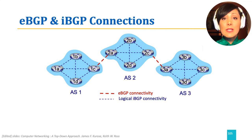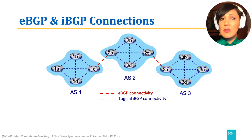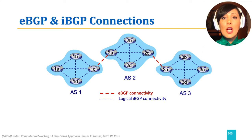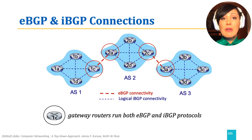The routers within each AS have logical IBGP connections. Note that in IBGP, these are TCP connections and might not correspond to physical links. The gateway routers run both EBGP and IBGP — they have EBGP connections with gateway routers from other ASs, and IBGP connections with routers within their own AS.